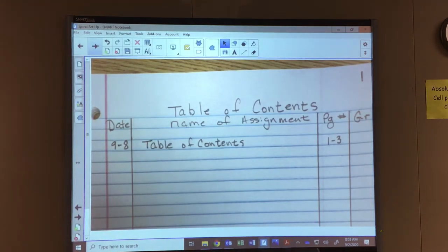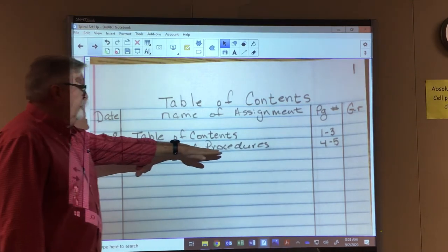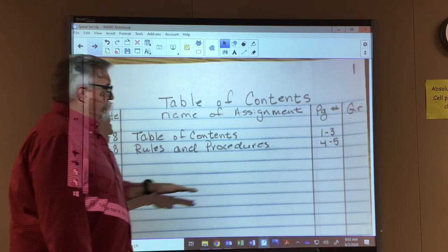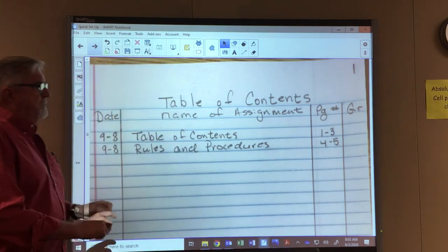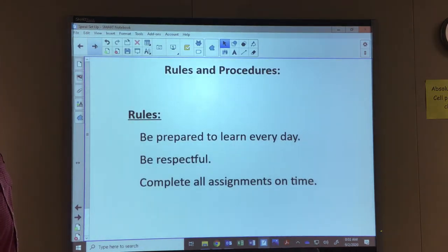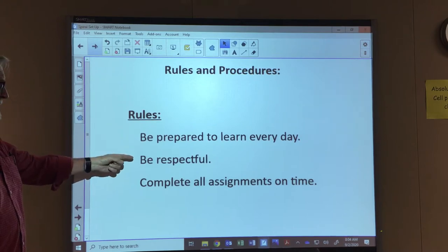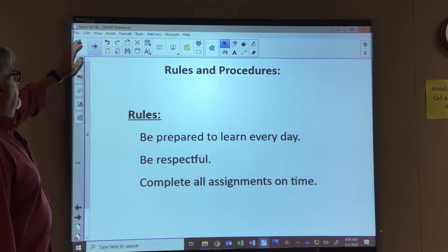The next thing we're going to put in our spiral are rules and procedures. Same date because we're doing it today, so nine dash eight. Mine took me two pages, so I put four through five. You might want to wait until you're done copying it to put the page numbers—you might be able to fit it all on one page. So the rules and procedures, this is the first thing we'll write down. Here are rules: be prepared to learn every day, be respectful, and complete all assignments on time.